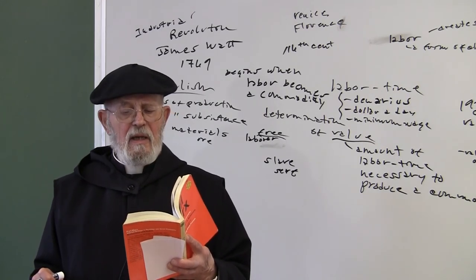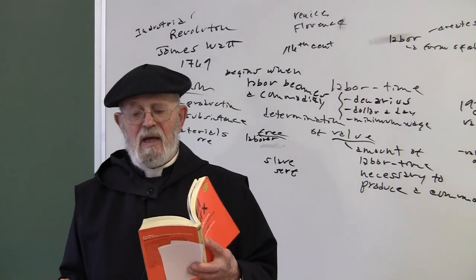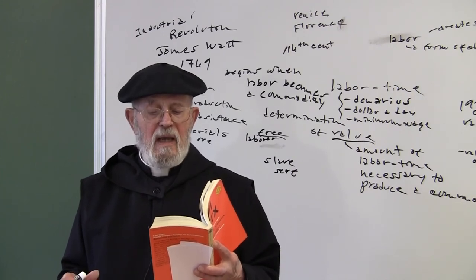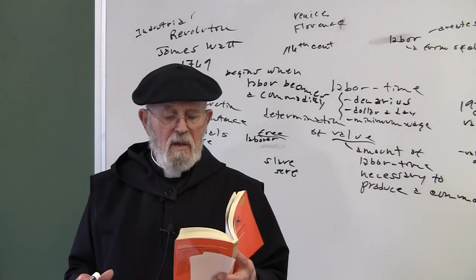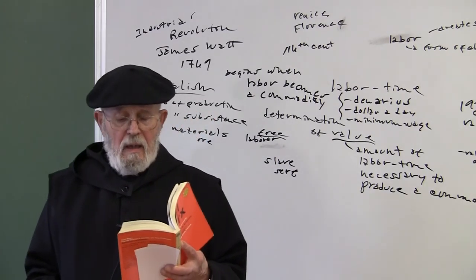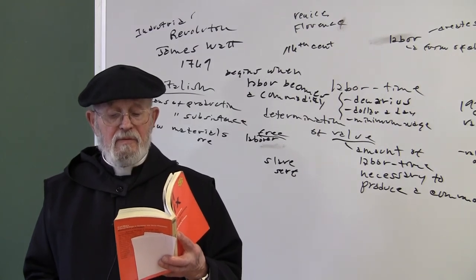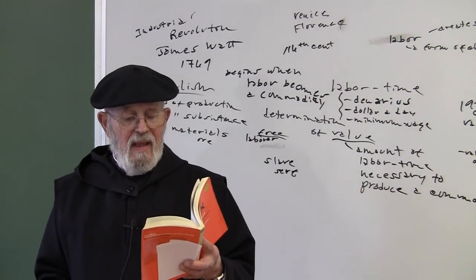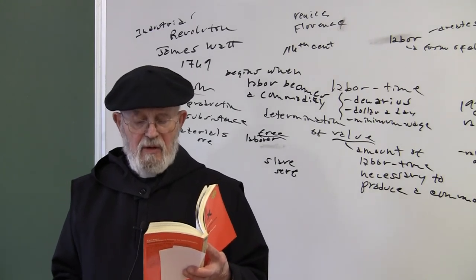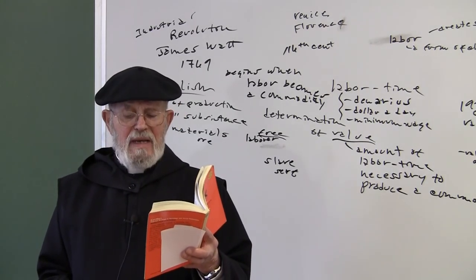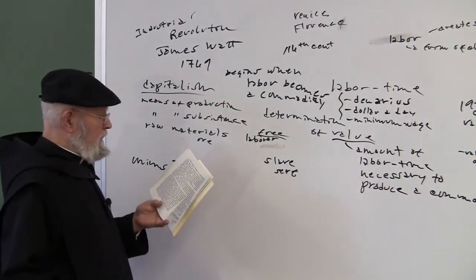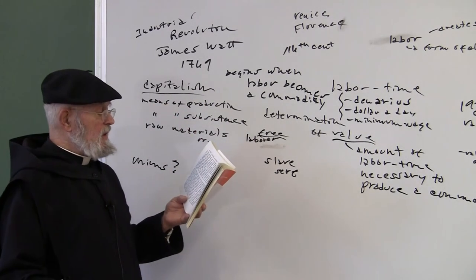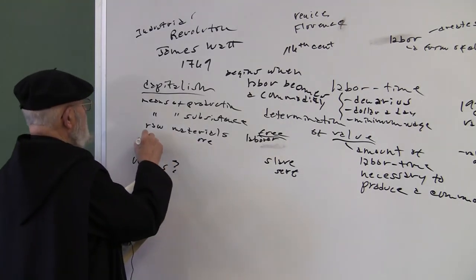The relations of production in their totality constitute what is called the social relations society, and moreover a society at a definite stage of historical development, a society with a unique and distinctive character. Feudalism. The age of capitalism. Capital. Down to the second paragraph from the bottom on page 147. Capital consists not only of the means of subsistence, the instruments of labor, means of production, and raw materials, but also material products. It consists just as much of exchange values.